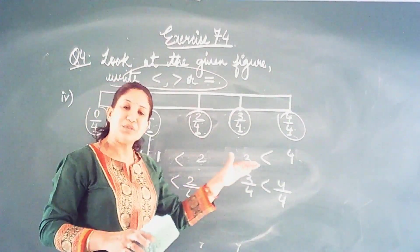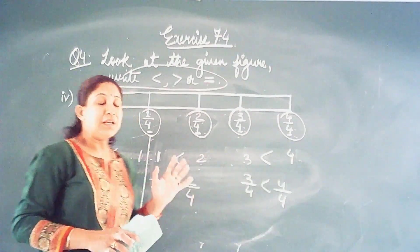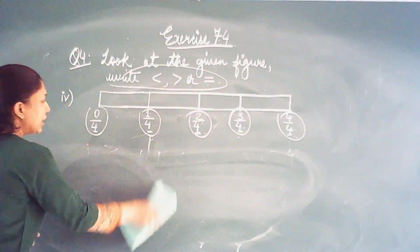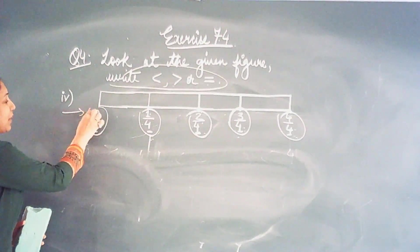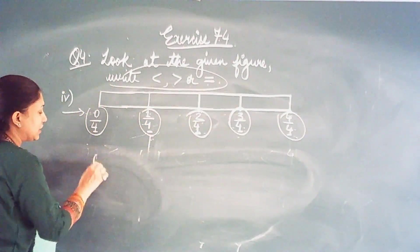So this is how you have to see the given figure and put the appropriate sign. Here you saw the denominator was same. And now you change the numerator. See the pattern. It is sorted in ascending order. See 0, 1, 2,